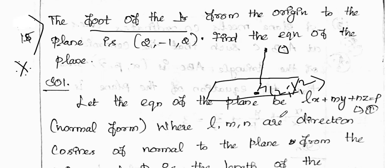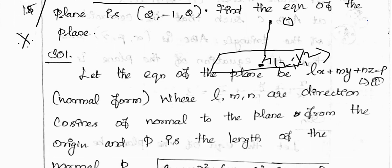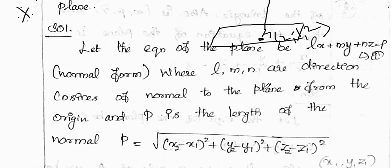Let the equation of the plane be Lx + My + Nz = P. This is the normal form. Here L, M, N are the direction cosines of the normal to the plane from the origin, and P is the length of the normal — that is, the length of the perpendicular from the origin to the plane.